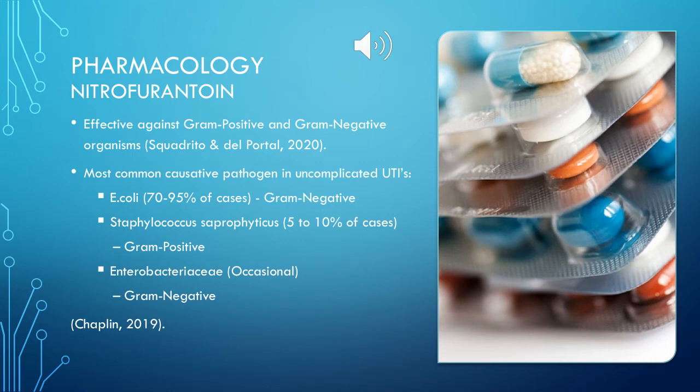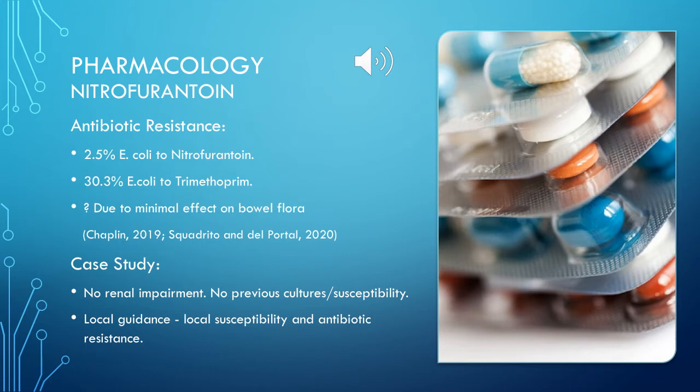Nitrofurantoin is effective against most gram-positive and gram-negative organisms. According to NICE guidelines, the most common causative pathogen in uncomplicated UTIs is E. coli, which is gram-negative. NICE guidance advises that Antimicrobial Resistance Quarterly Surveillance found only 2% resistance of E. coli to nitrofurantoin — the lowest of the standard treatments. Researchers think that nitrofurantoin's continued effectiveness and minimal resistance patterns are partly attributed to its minimal effect on bowel flora.